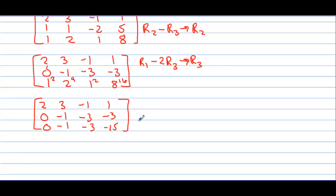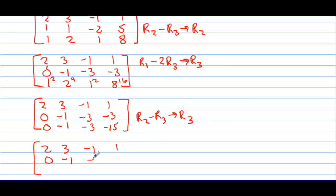Take row 2 minus row 3 and replace row 3 to get a zero. We get [0, 0, 0 | −3 − (−15) = 12]. Since the last row gives 0 = 12, which is false, there is no solution.